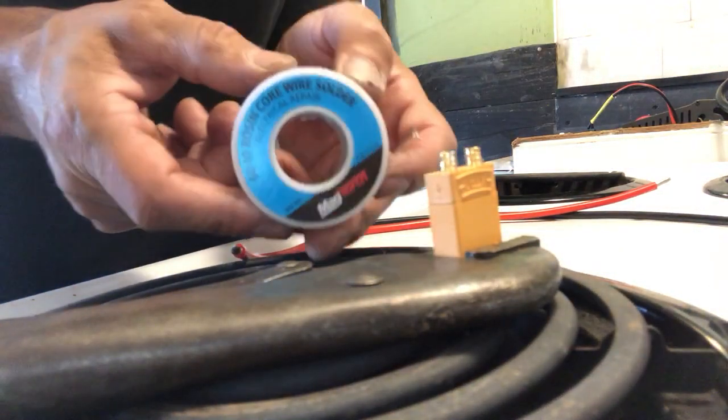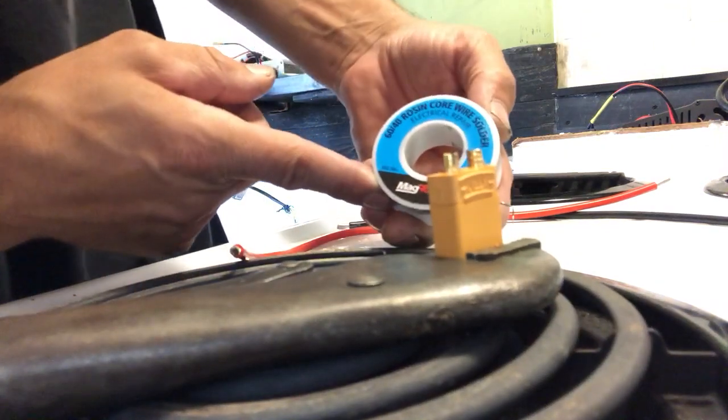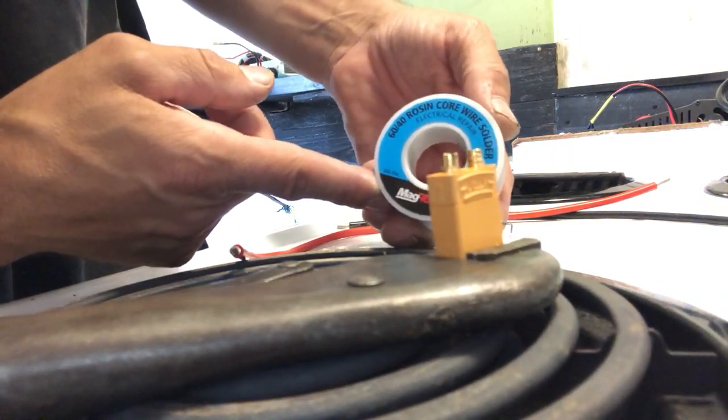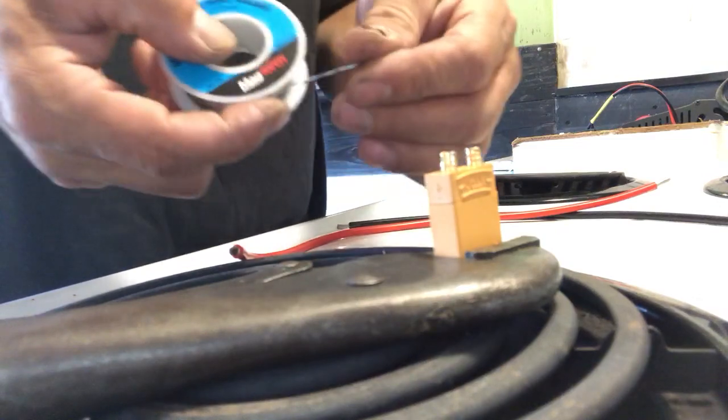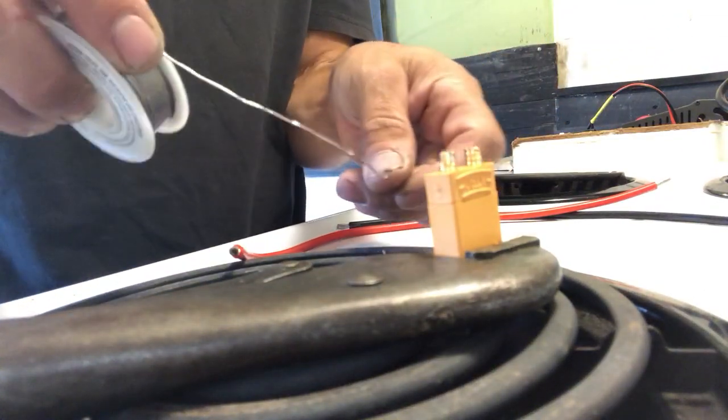This is the type of solder that I'm using. It is 60-40 rosin core wire solder. It's not too thick. It flows nicely. That's what we want.